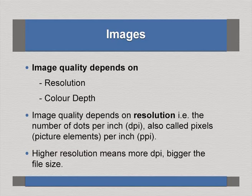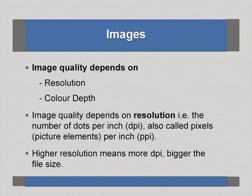When capturing images, resolution and color depth determine image quality. Present-day computers can generate even one billion color shades. TV advertisements mention HD quality, 4K, and 8K — meaning resolution is quite high, almost resembling natural color depth. Image quality depends on resolution — that is, the number of dots per inch, also called pixels or picture elements per inch (PPI). Higher resolution means more dots per inch and a bigger file size.